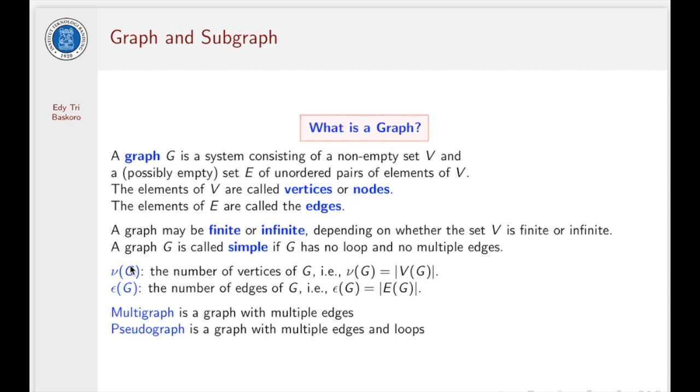We are going to use this notation: Nu G is the number of vertices of a graph G. And then epsilon G is the number of edges in a graph G. And G we call multiple graph if G has multiple edges. And G we call pseudo graph if G with multiple edges and loops.